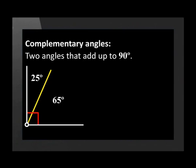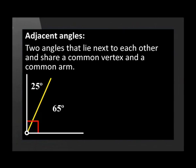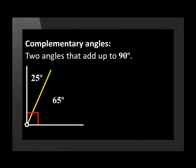When two angles add up to 90 degrees, they are referred to as complementary angles. Here the complementary angles are adjacent to each other, which means they are next to each other. Adjacent angles are two angles that lie next to each other and share a common vertex and a common arm. Complementary angles are any angles that add up to 90 degrees — they don't have to be adjacent to be complementary, and adjacent angles don't have to be complementary to be adjacent.